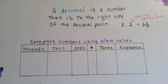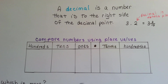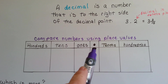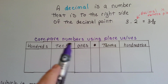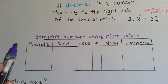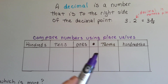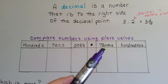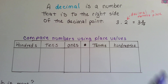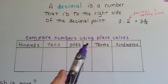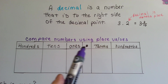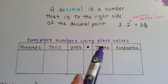We can compare numbers using place values. Here's our decimal point. To the left of the decimal point we have our ones, tens, hundreds, and it goes bigger and bigger — thousands, ten-thousands. On the right side of the decimal point we have tenths, hundredths, and it keeps going that way. Notice there's no 'one-ths' — it goes straight to tenths.